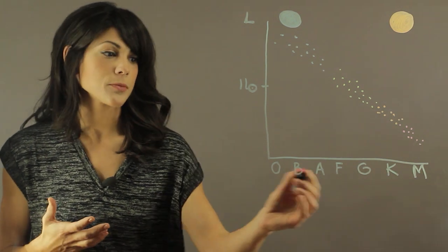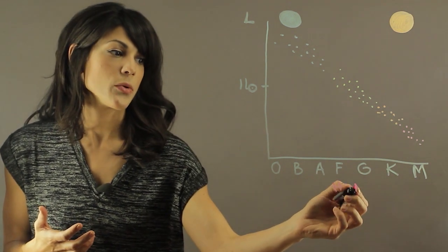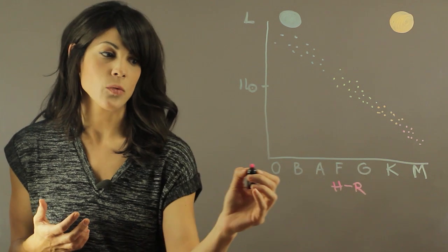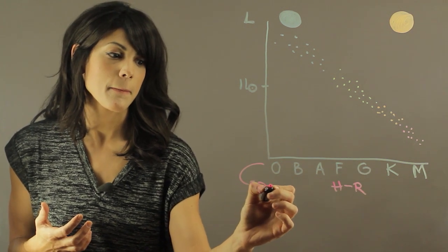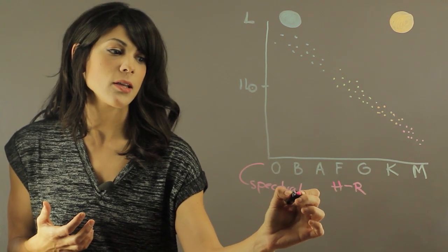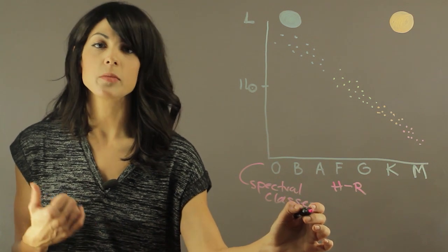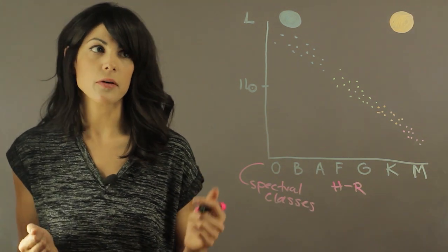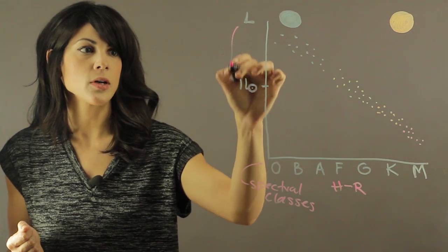The way HR diagram works is that you have the spectral classes in one side and then you have your luminosity. So how luminous the star is, how much power is it giving off. So here you have a luminosity scale.